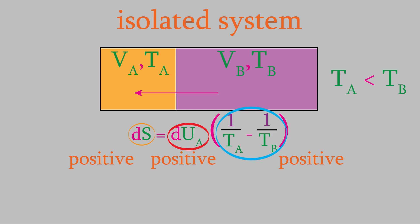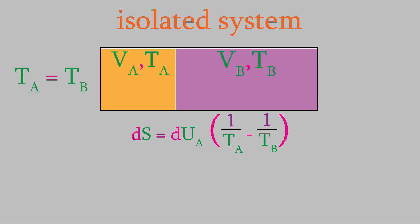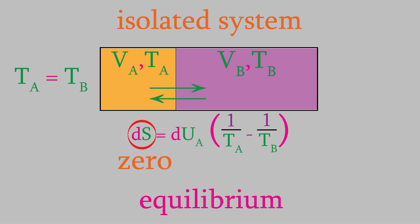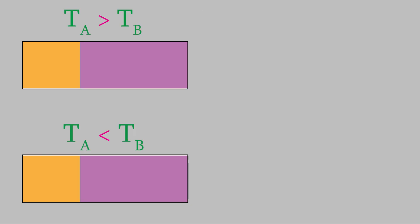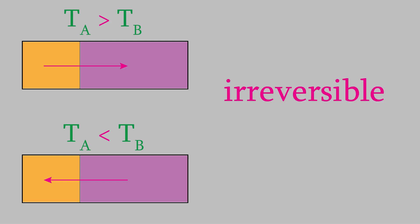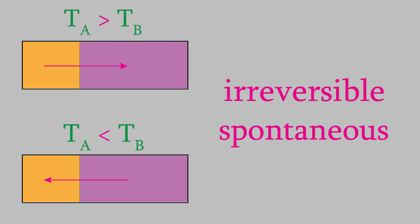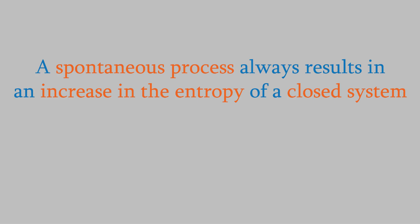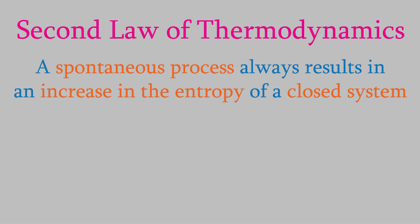We've seen that the entropy of the system will increase whenever either side of the container is hotter than the other. The only time that isn't the case is when both sides have the same temperature — in that case, there is no net energy change on either side, so the entropy change is zero. In that situation, energy is exchanged equally between both chambers; the two sides are in equilibrium when the entropy change is zero. In the other situations, where one chamber was hotter than the other, energy only flows in one direction — so that's an irreversible and spontaneous process. What this demonstrates is that a spontaneous process must always result in an increase in the entropy of an isolated system.